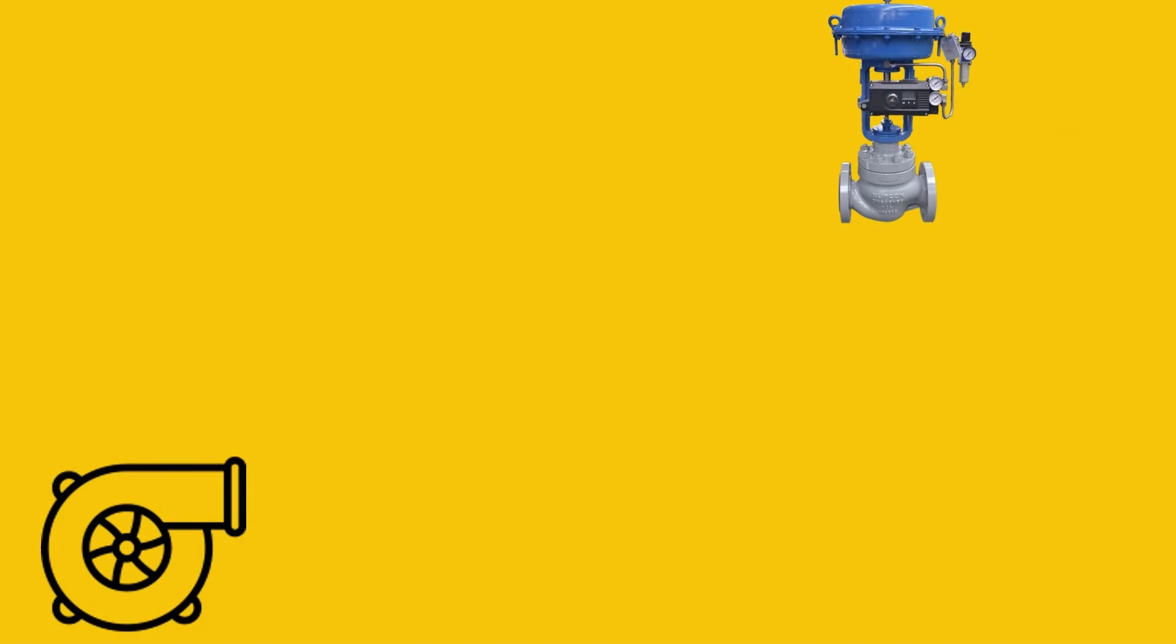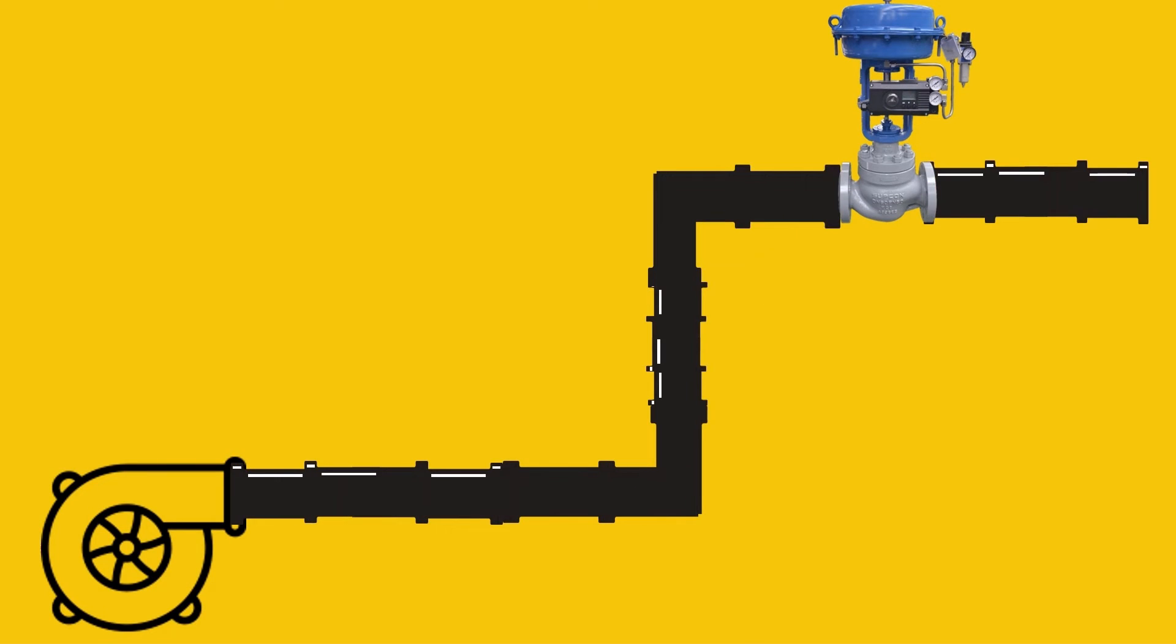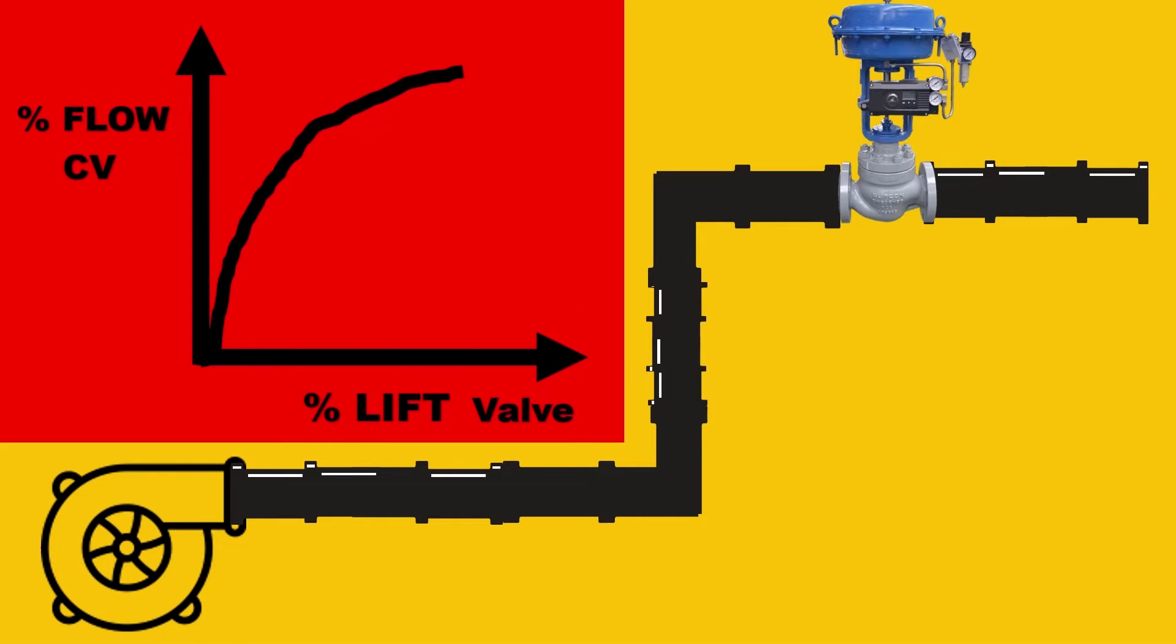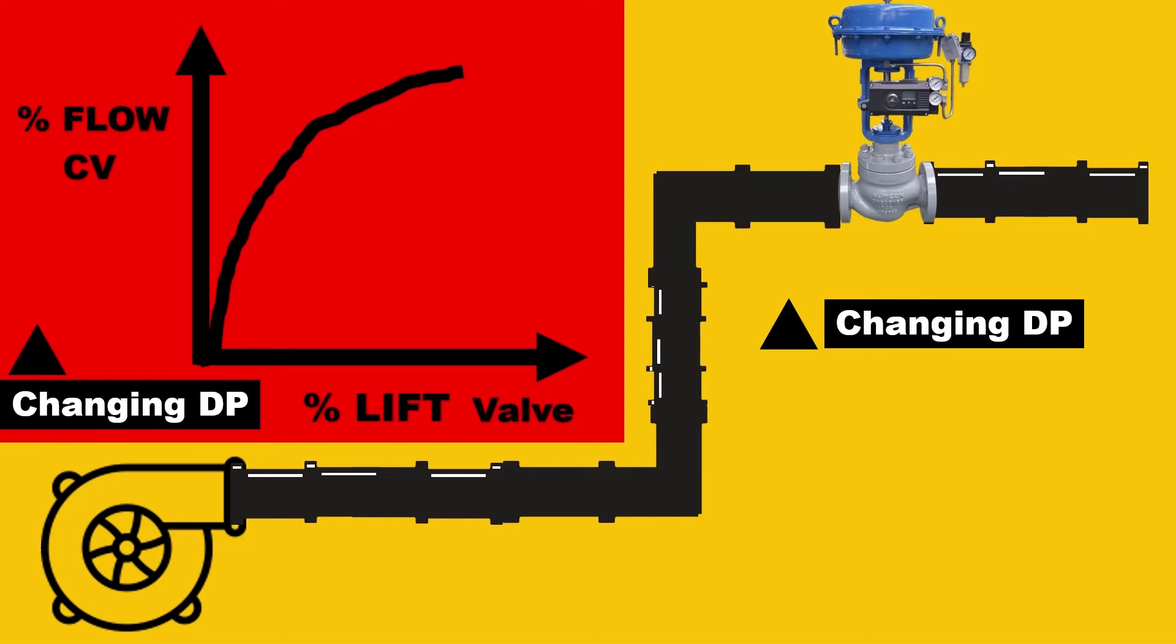Now imagine we put the valve in actual process conditions. What happens here? When we plot lift versus flow CV percentage, surprisingly, it's not a linear curve. Why? Because the DP constantly changes and is not kept constant. This is called installed valve characteristics due to the changing DP.